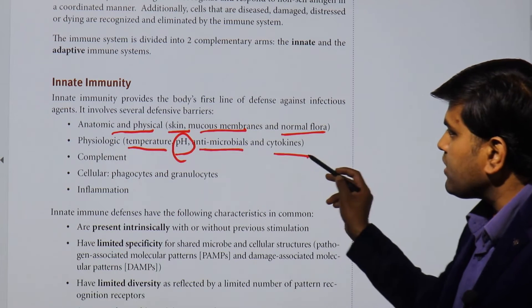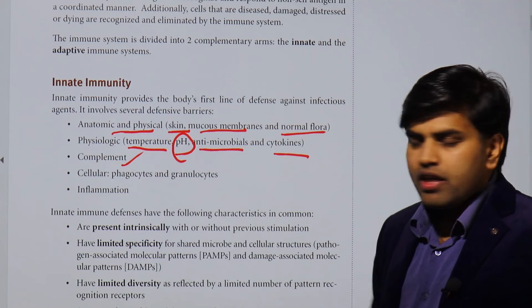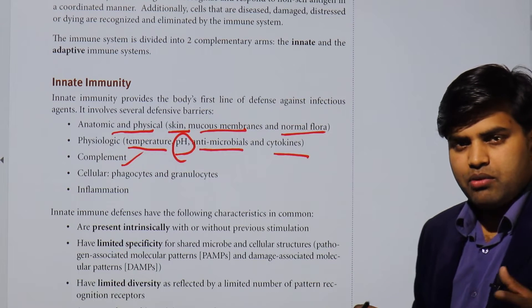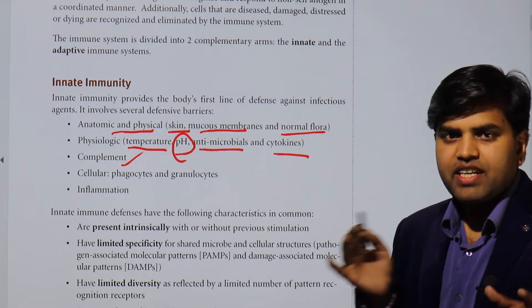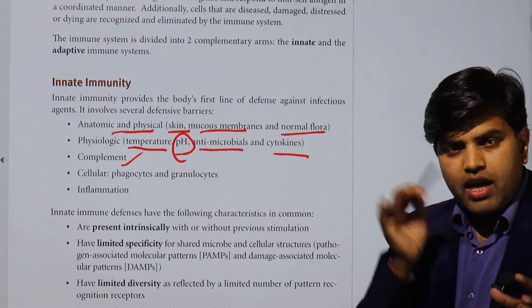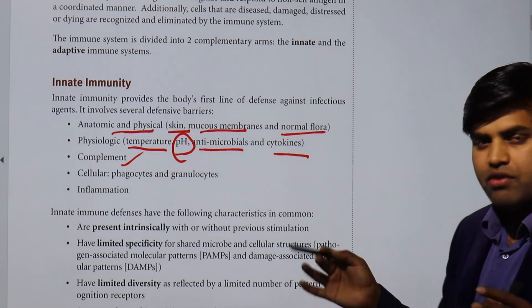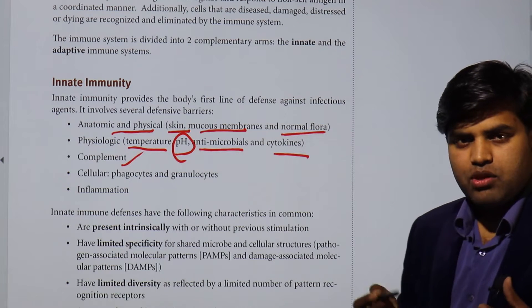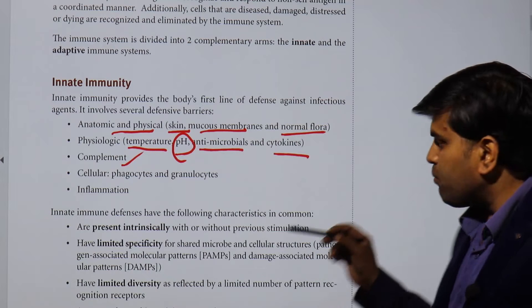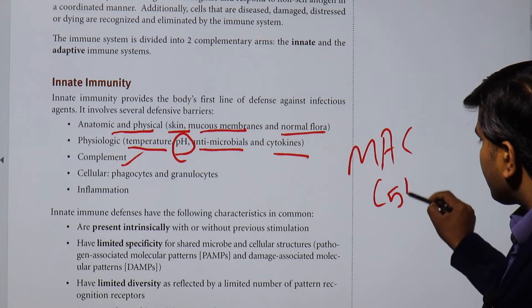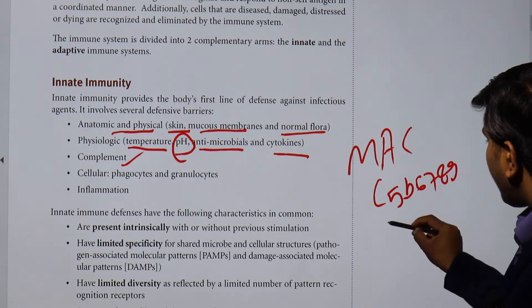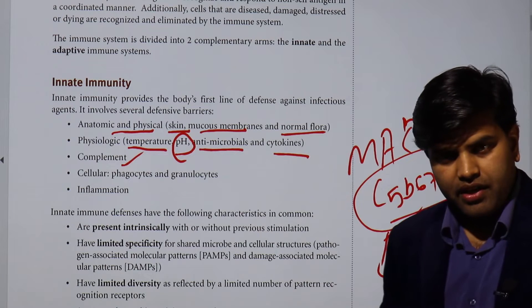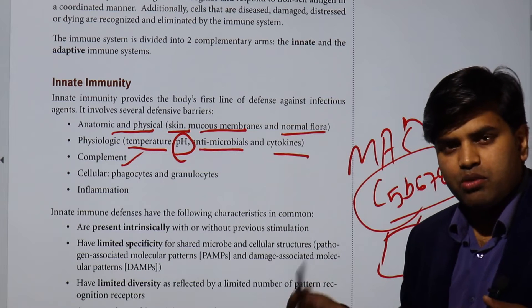Antimicrobials and cytokines are also physiological components. The complement pathway — specifically the alternate complement pathway — requires no antigen-antibody interaction, so there is no requirement of adaptive immunity to activate it. The alternate pathway can be activated from microbial surfaces and helps to kill organisms. The main product of the complement pathway is the membrane attack complex, MAC, which is C5b6789. These drill into bacterial surfaces, make them porous, and kill the bacteria.